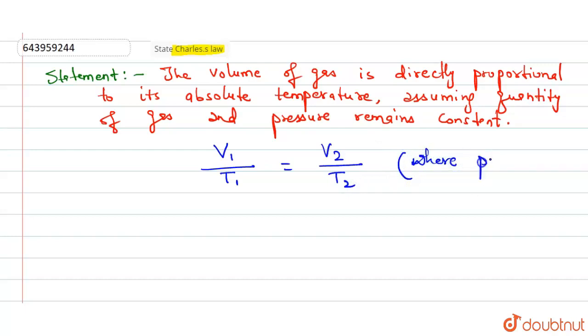So here you can see that volume of a gas is directly proportional to its temperature. If volume increases, temperature will also increase, and vice versa - if volume decreases, temperature will automatically decrease.